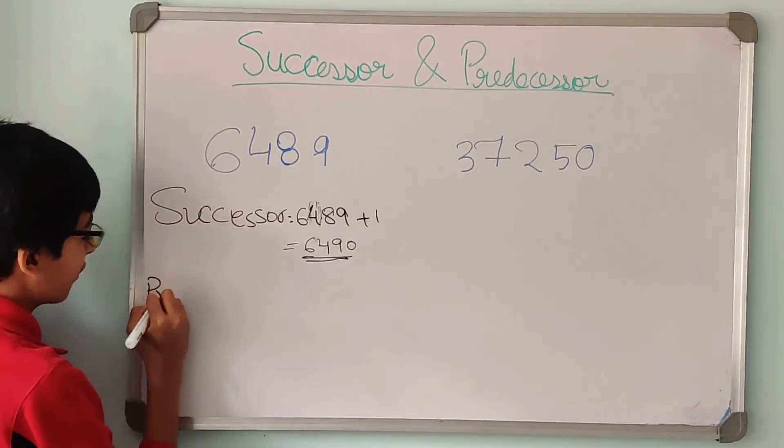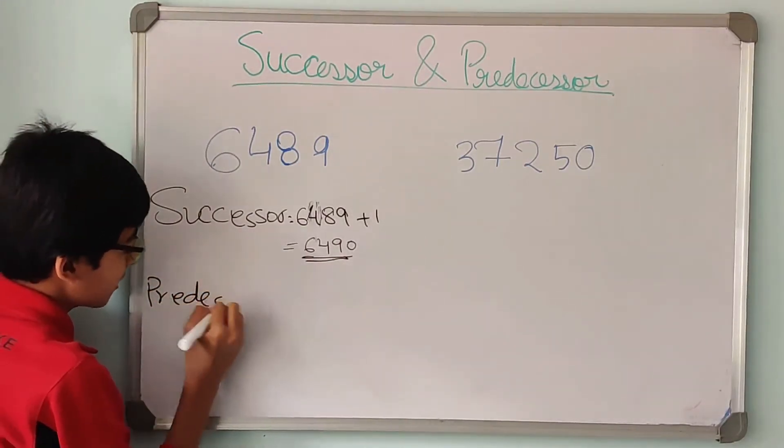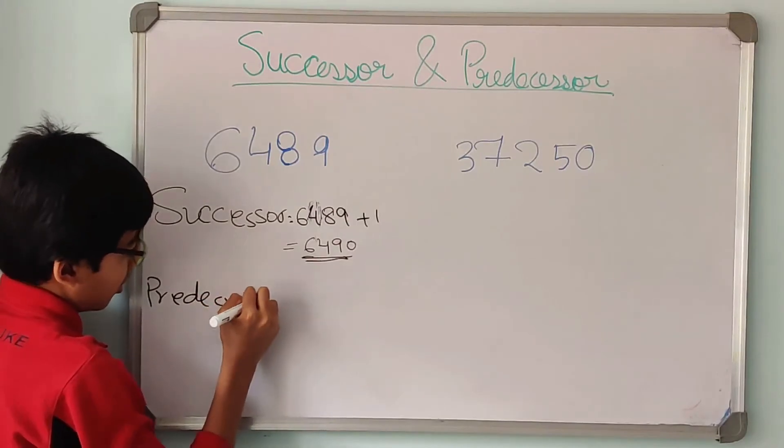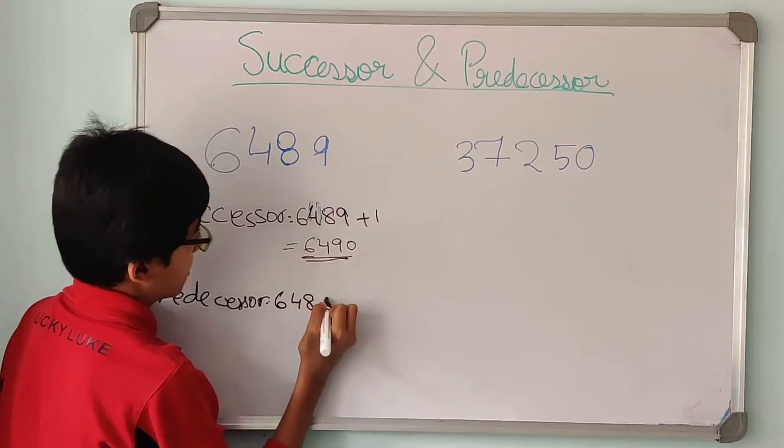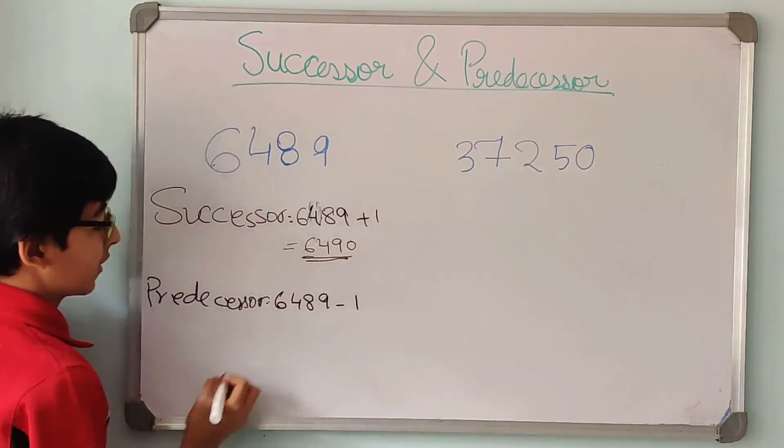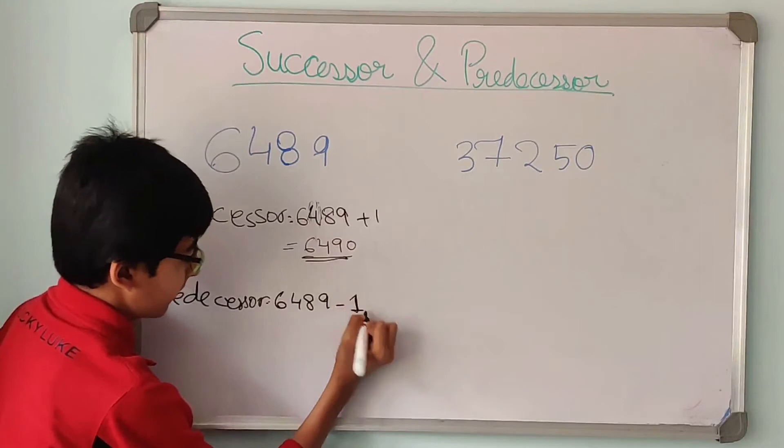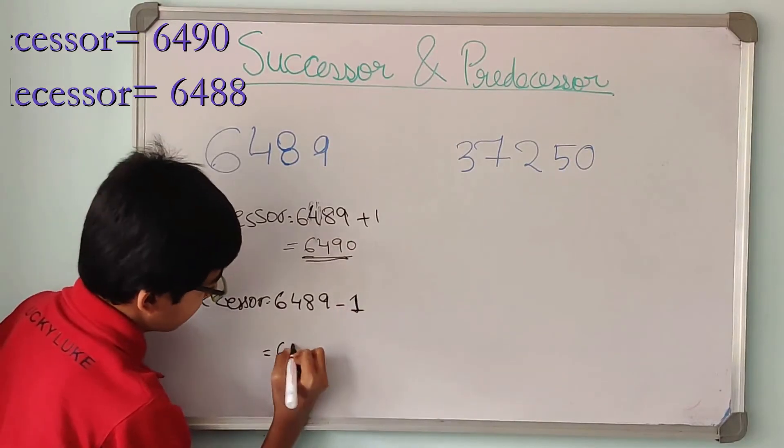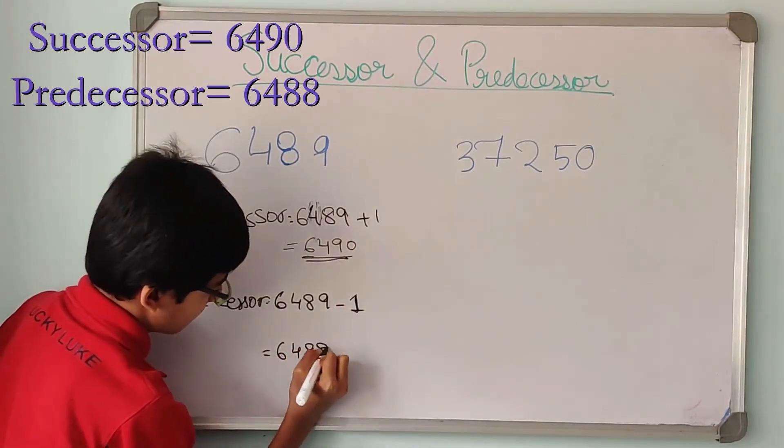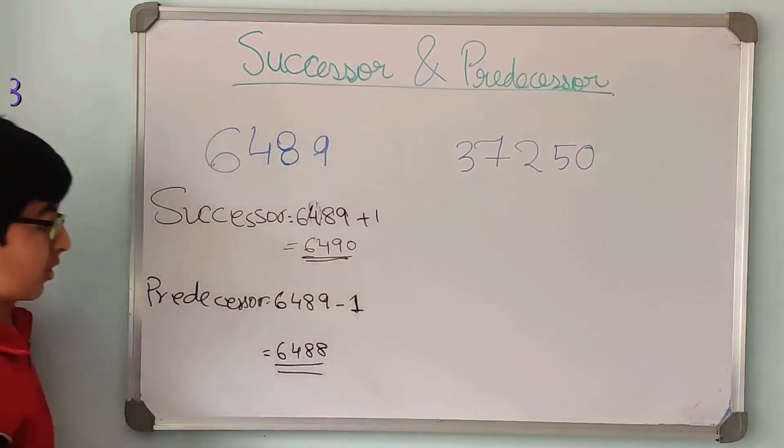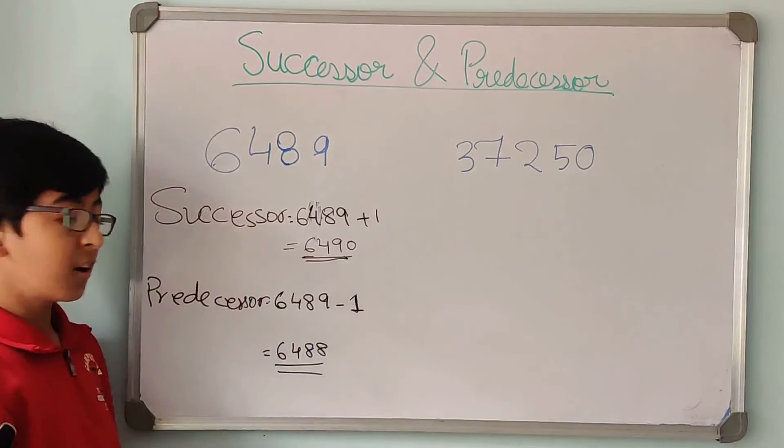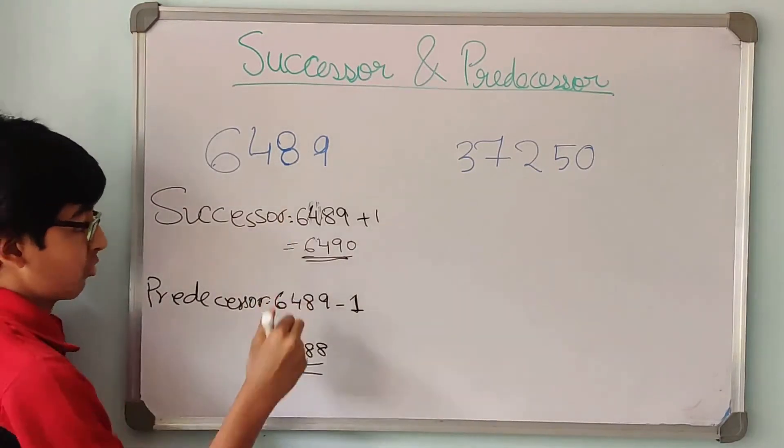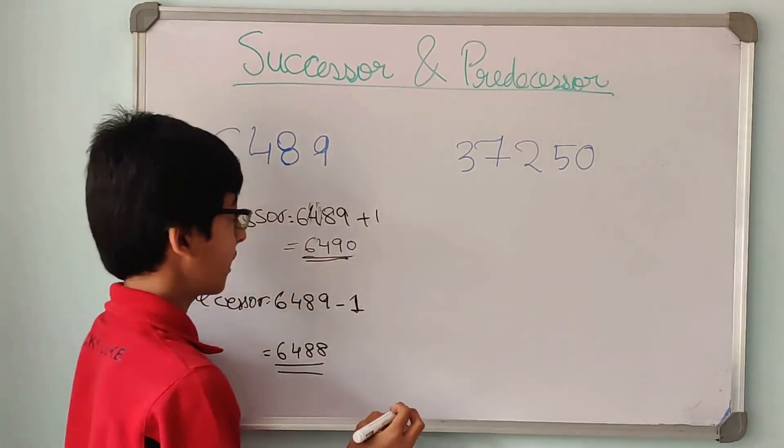And now let us find the predecessor of 6489. So 6489 minus 1 gives us 6488. And over here also you can see that successor is 2 more than the predecessor. That is why it shows that these 2 are correct.